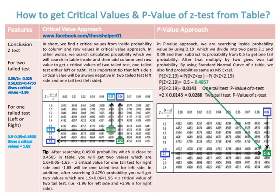In the p-value approach, we search inside the probability value using the test statistic 2.19, which is divided into two parts — 2.1 and 0.09 — and then subtract its probability from 0.5 to get the one-tail probability. Multiplying by 2 gives the two-tailed probability. Using the standard normal curve and z-table, we also find the same p-value as MS Excel, which is 0.0286 for the two-tailed test.